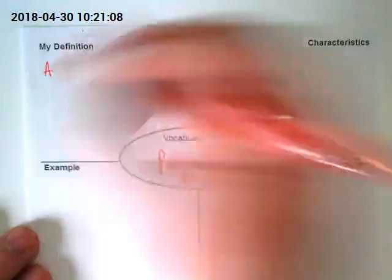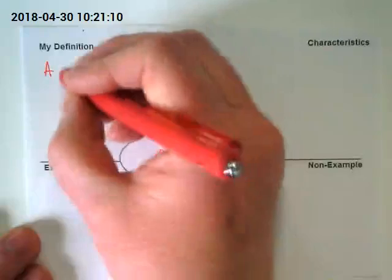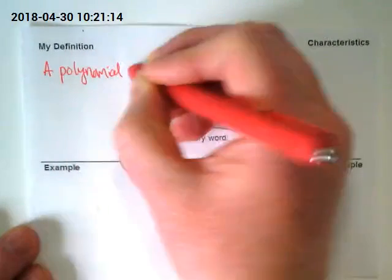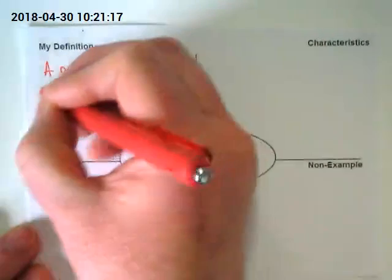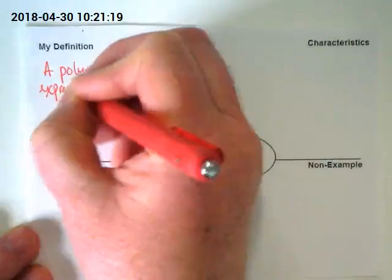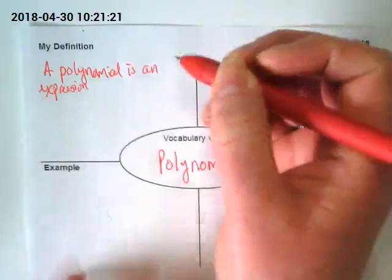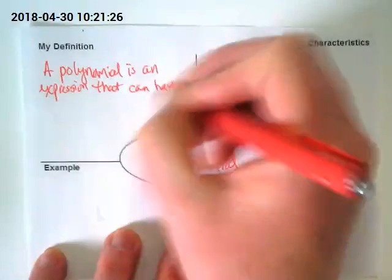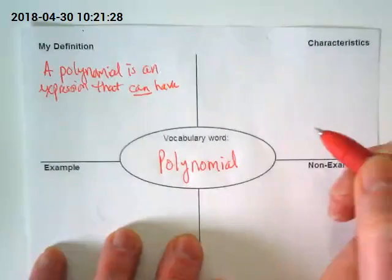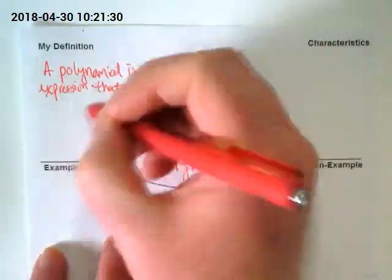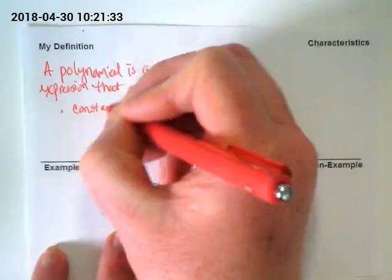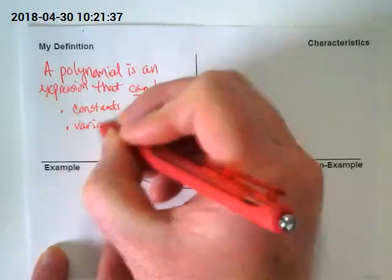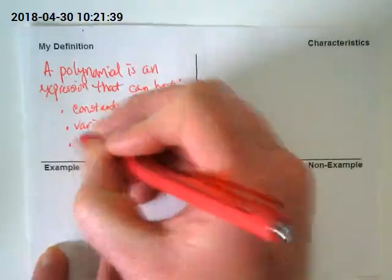Definition. A polynomial is an expression that can have — it doesn't have to have, but it can have — and I'm going to make a little mini list: constants, variables, and exponents.